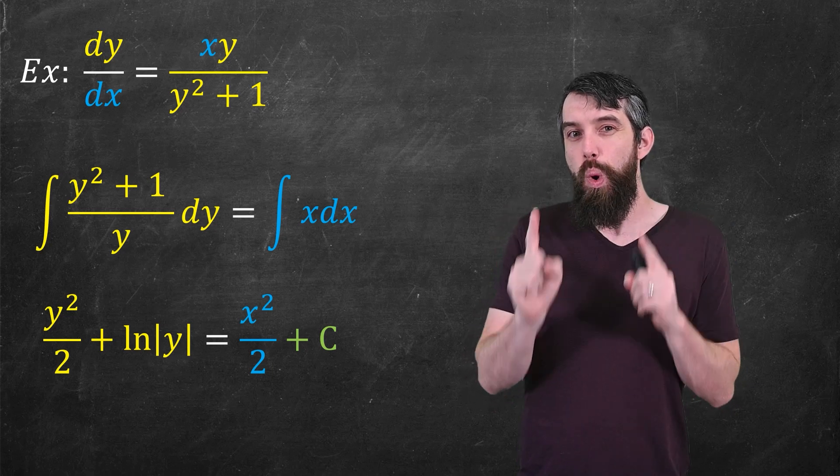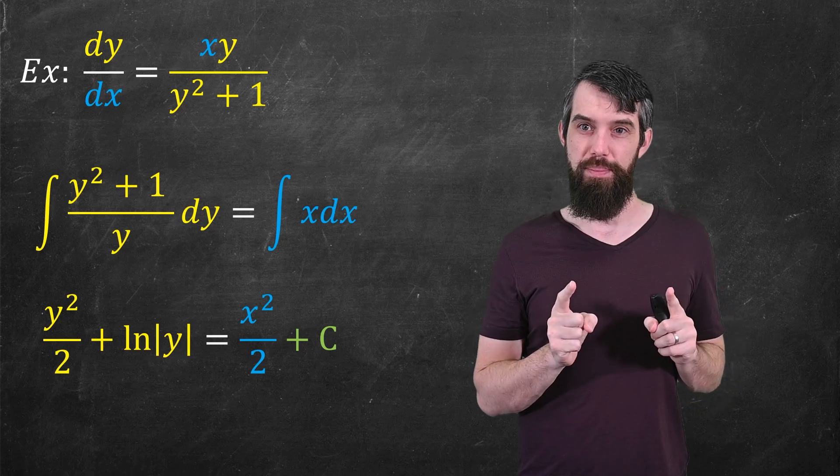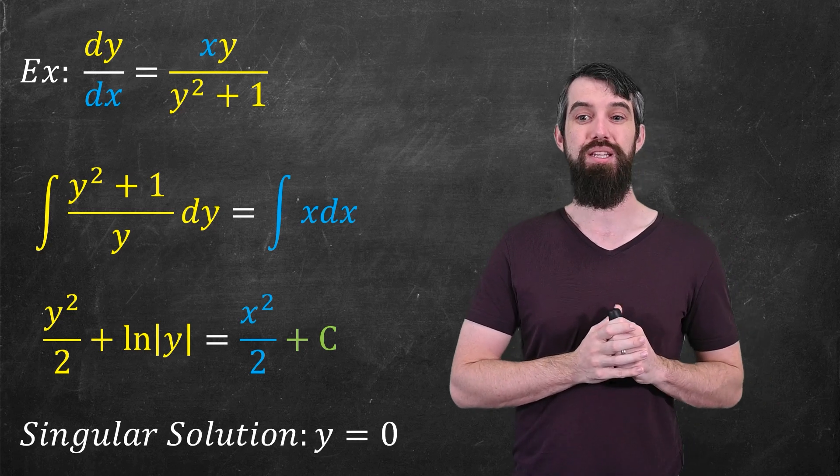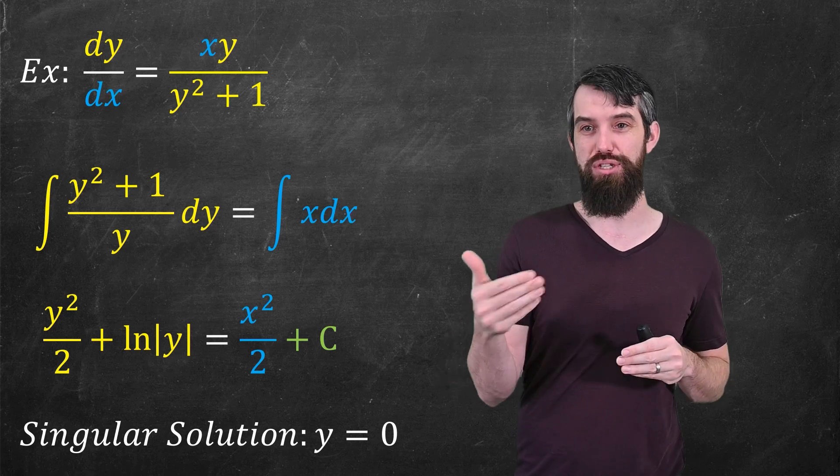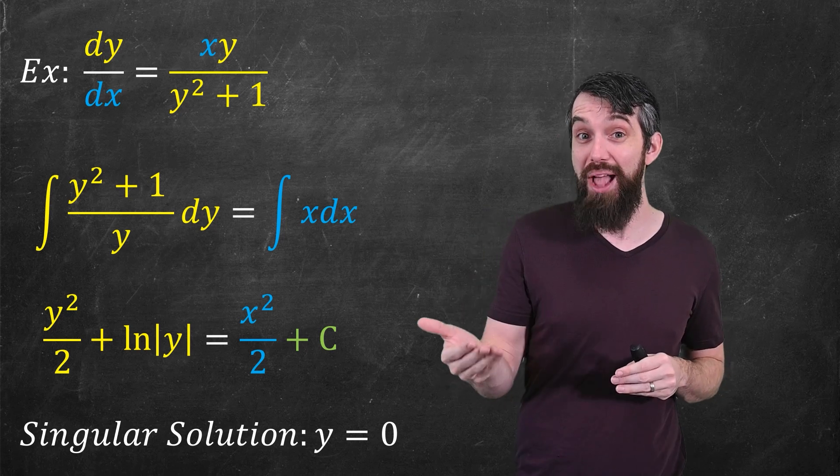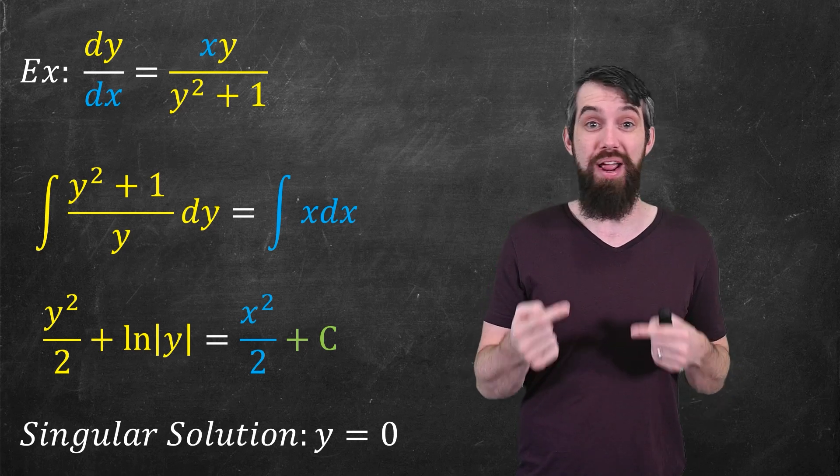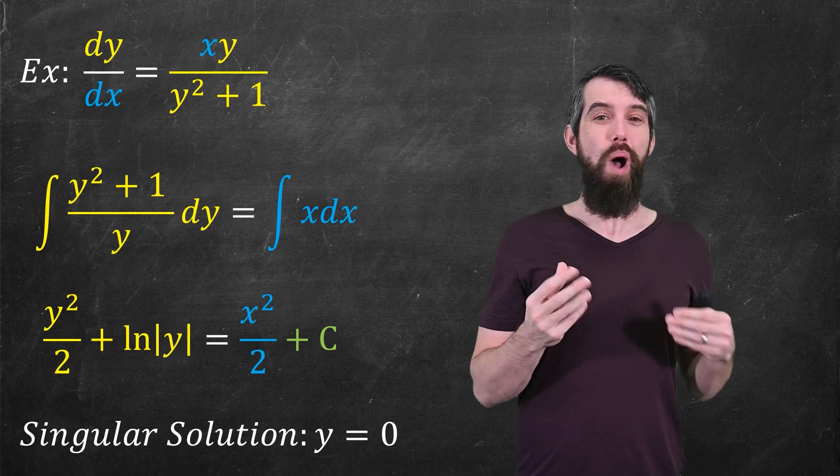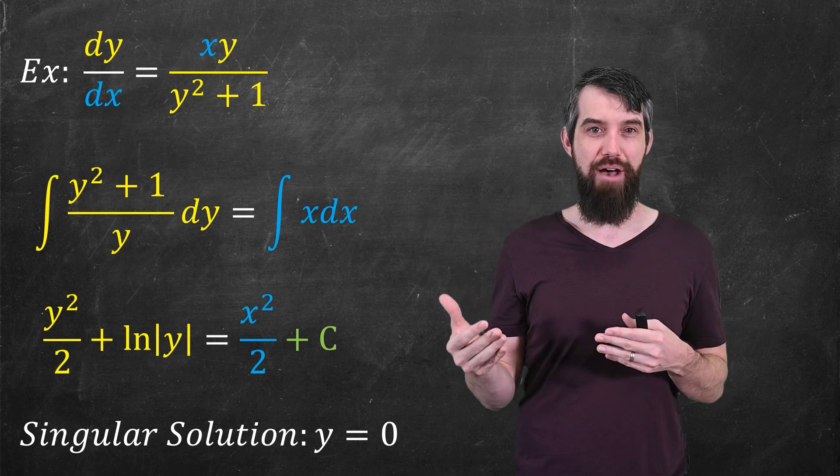However, there's even one more complication, which is that there is another solution to this differential equation, one that is not written in this format. It's pretty simple. It's just y equals 0. We sometimes call this the singular solution. The derivative of y equals 0 is just 0. That's the left-hand side. And if I plug in y equals 0 on the right, I'd get 0 equals 0. So this is a solution. But y equals 0 is not in the form of this implicit equation that I have.